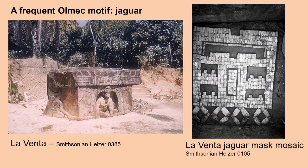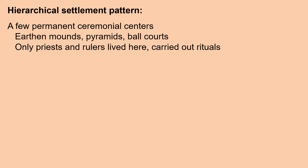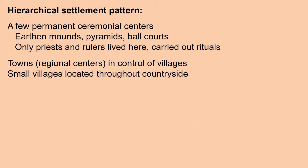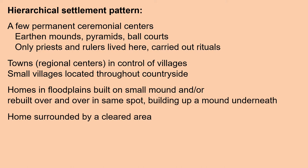A frequent Olmec motif is the jaguar, shown here in a mosaic, very stylized. On the left, a person appears to be emerging out of the mouth of a stylized jaguar. The Olmec had a hierarchical settlement pattern, with a few permanent ceremonial centers containing earthen mounds, pyramids, and ball courts, where only priests and rulers lived and carried out rituals. Then there were towns and regional centers in control of villages. Homes were built in floodplains on small mounds, rebuilt over and over in the same spot.